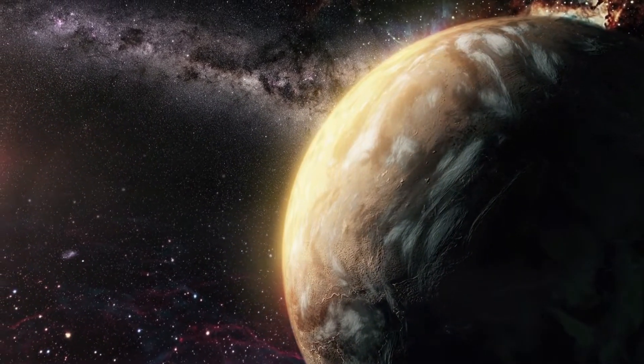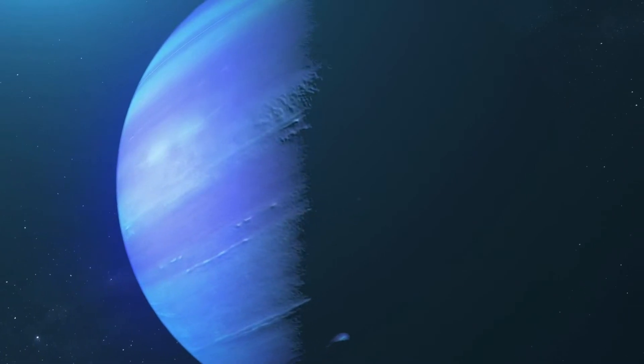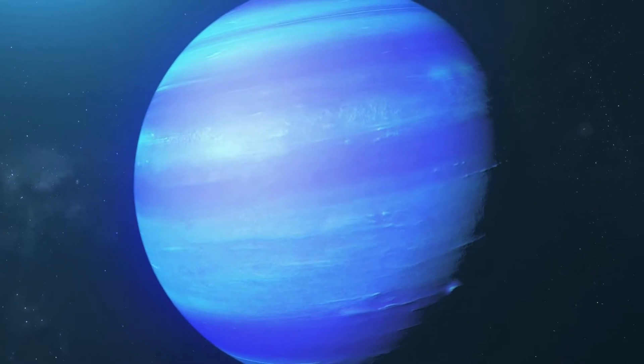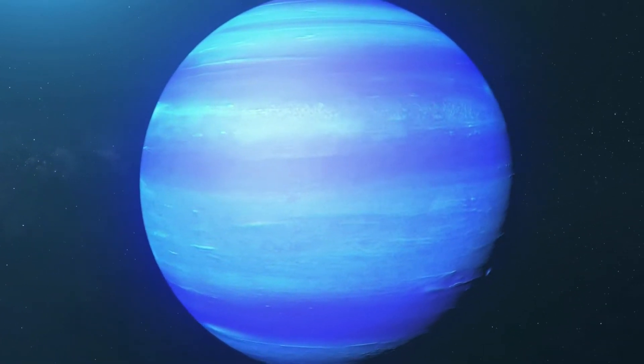And some of them are very strange, tidally locked to their star with temperature high enough to melt iron. Other exoplanets with the size of Jupiter orbit not one, but two stars at a time.